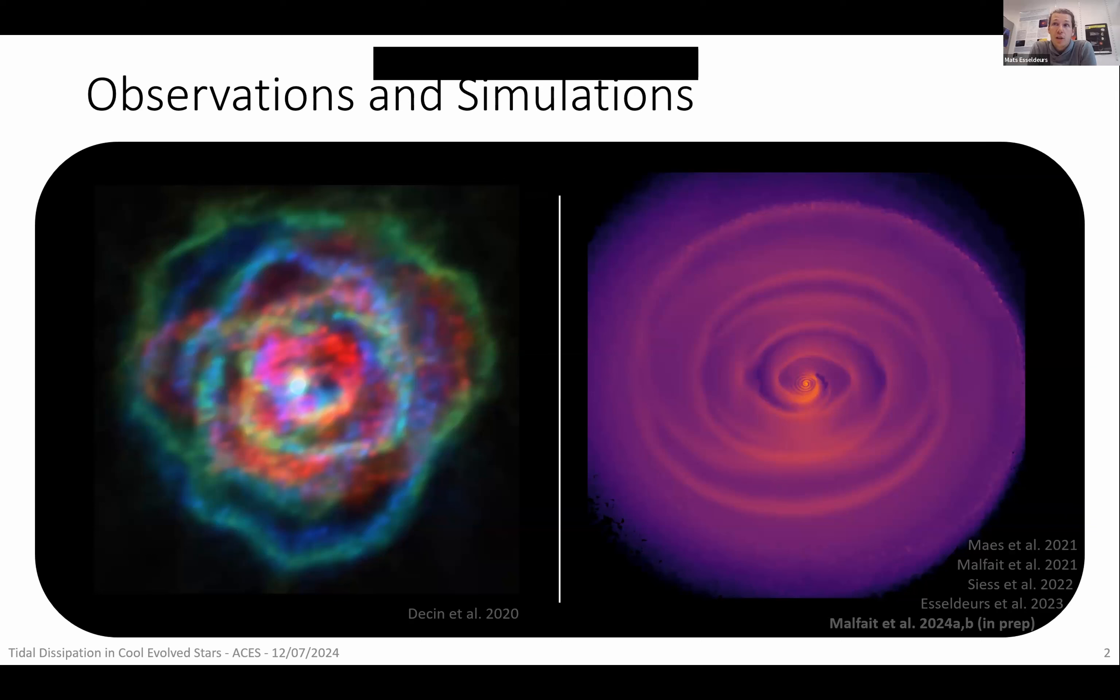On the right you have a simulation done by Oline Malfet of a triple system with an AGB star where she tried to reproduce the morphological structures we see in this AGB star. She already talked about this simulation during her presentation so I'll not go into detail further.